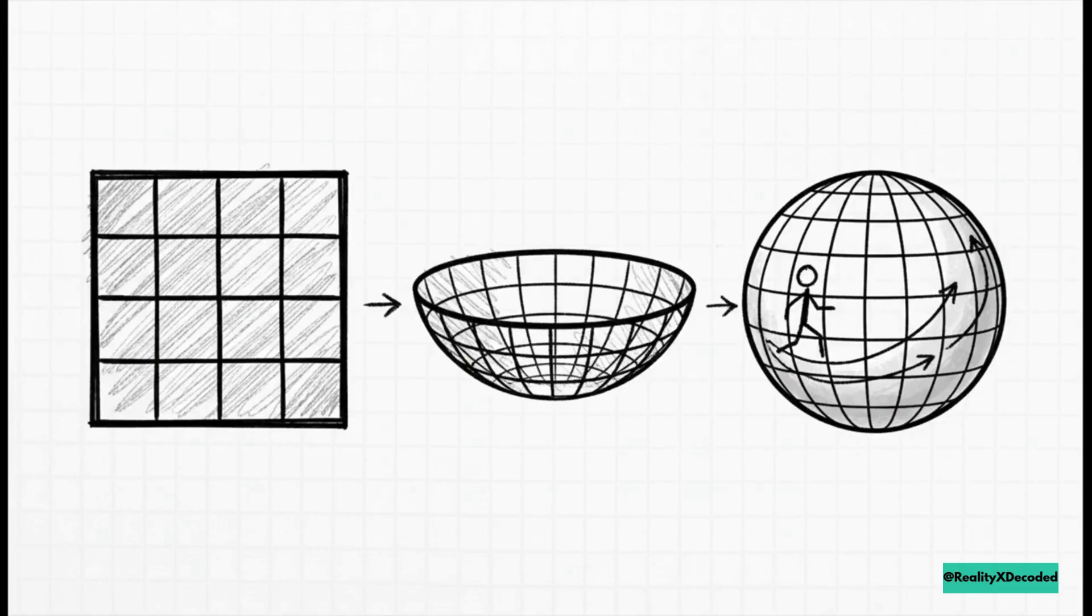Okay, got it? Now let's apply that same exact logic to our two-dimensional plane. If that flat surface has a very slight imperceptible curve to it, what happens? Well, eventually it folds in on itself through the third dimension to form the surface of a sphere.